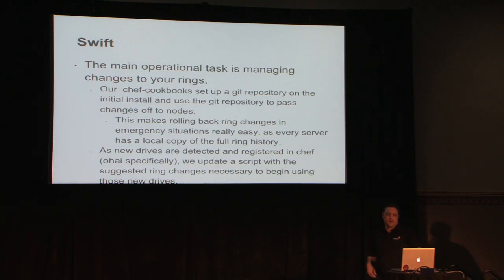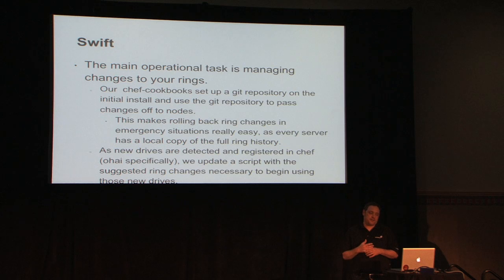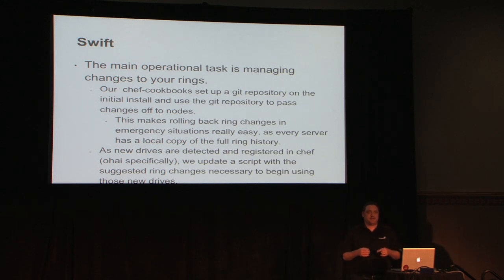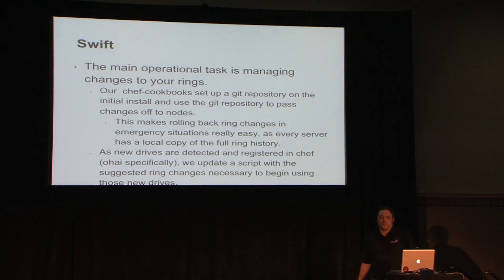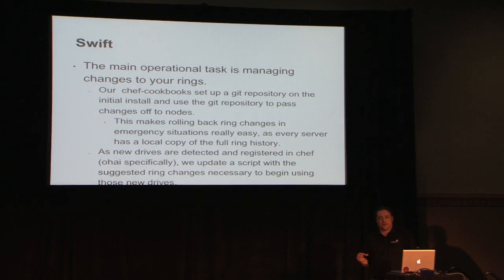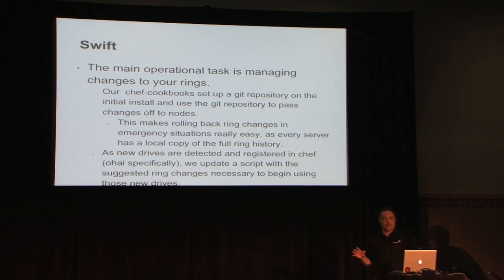For Swift, the main operational task is managing the ring. We took an approach that sets up a Git repository on the initial install of Swift, so every time a Swift node checks in, it can check out that copy of the ring and apply it across the cluster — making it easy to roll back changes. As new drives are detected in Chef, they're added to the registry and we update a script with the suggested change. We're not at the point where we feel completely comfortable with full Swift automation, though, because damage to the ring causes damage throughout the system and you've likely just lost data. So we've approached Swift very carefully.